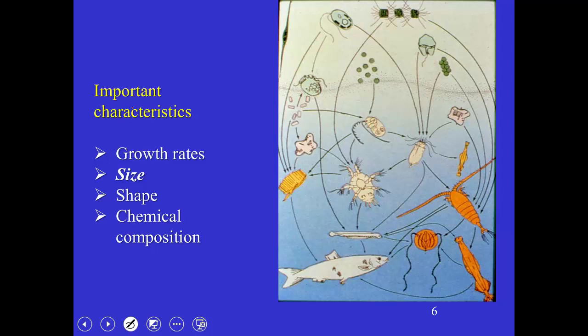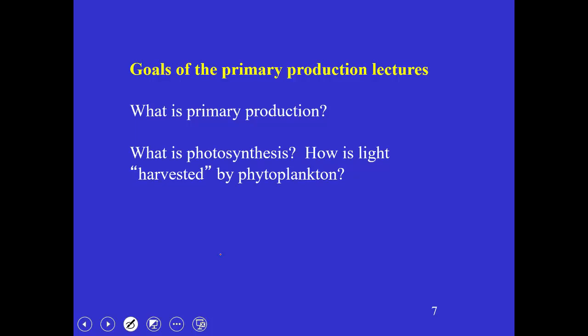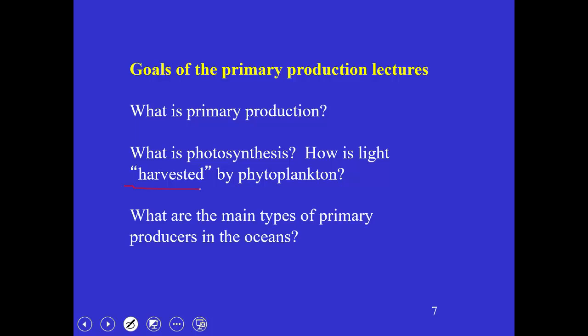We'll be going over some important characteristics of these phytoplankton—talking about their growth rates, their size (which really matters a lot in the oceans), their shape, and their chemical composition. How big you are determines how big a prey you can ingest and how big a predator may be eating you. Over today and the next couple of lectures we'll talk about what primary production is, the details of photosynthesis—in particular how light is harvested by these organisms—and the types of phytoplankton we see in the oceans, then what controls their rates of production.